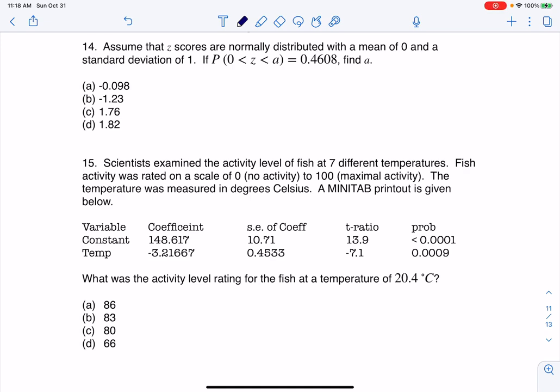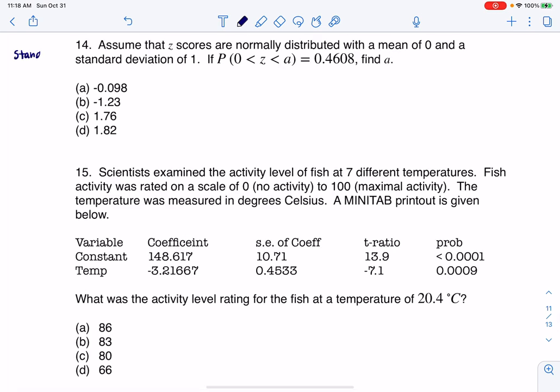All right, number 14 says assume that z-scores are normally distributed with a mean of 0 and a standard deviation of 1, which we know, so we're on the standard normal curve. Whenever you're dealing with z-scores, the mean is 0 and the standard deviation is 1. That's the big property coming out of them.